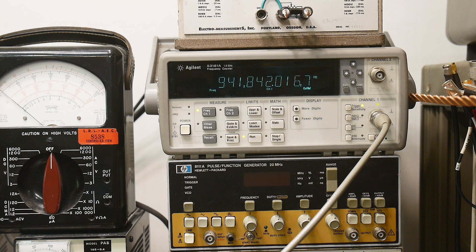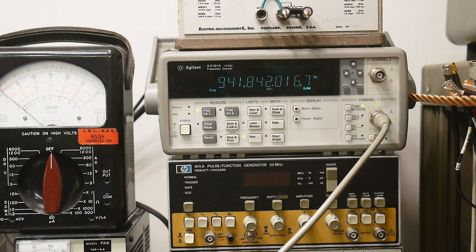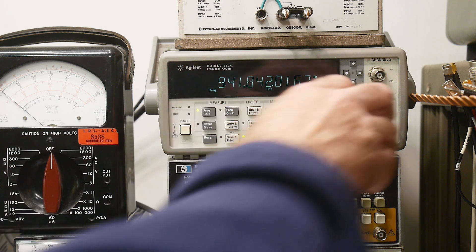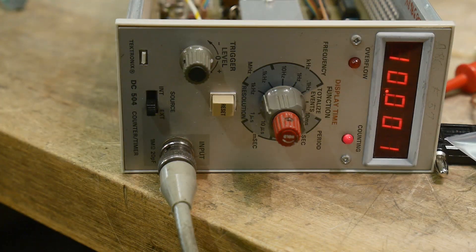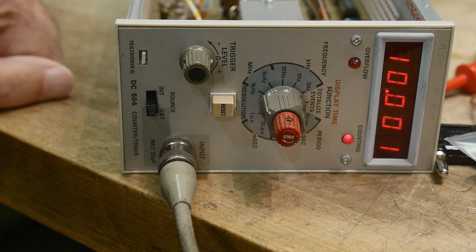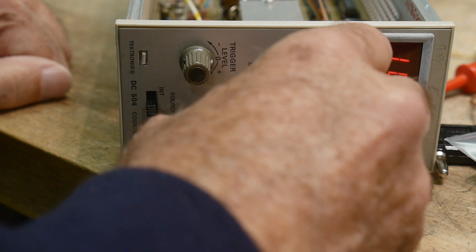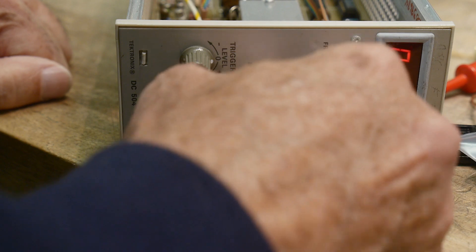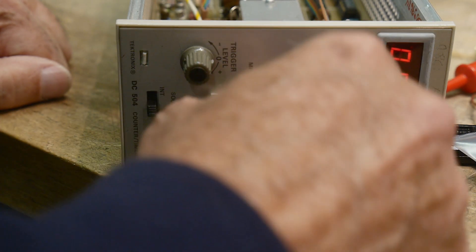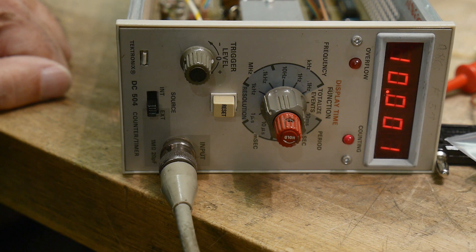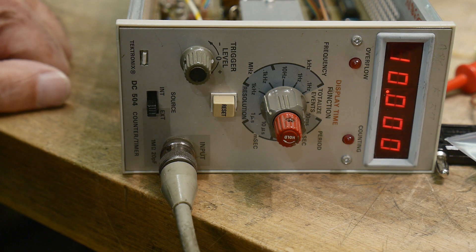And then we'll use it as a counter and see if it can measure 10 megahertz. I'll get my rubidium standard hooked up here and see if we can't measure 10 megahertz. Okay, I've got my rubidium coming in and it looks like 10 megahertz. Yeah, we can get a pretty good resolution out of it. So I'd say it is calibrated.